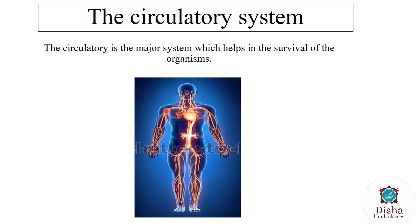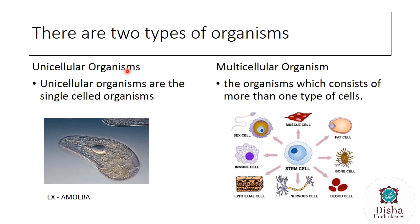Hello everyone, welcome to Disha Classes. Today we are going to discuss about the circulatory system. The circulatory system is the major system which helps in the survival of an organism. There are two types of organisms: unicellular organisms, which are single-celled organisms, and multicellular organisms, which consist of more than one type of cell. Examples of unicellular organisms include amoeba, and multicellular organisms have many cell types such as muscle cell, fat cell, bone cell, stem cell, epithelial cell, and blood cells.